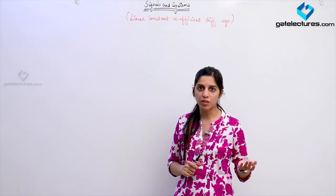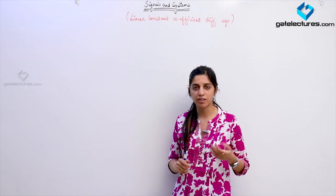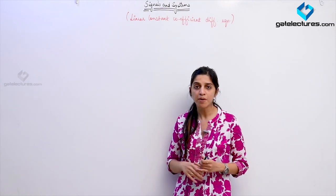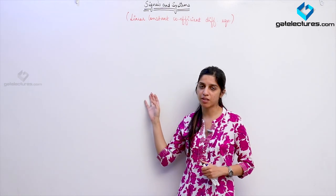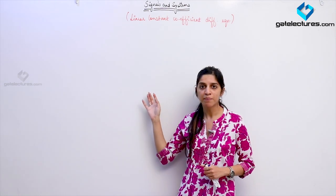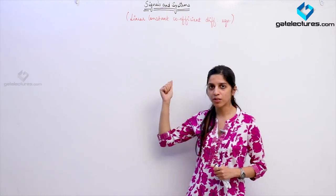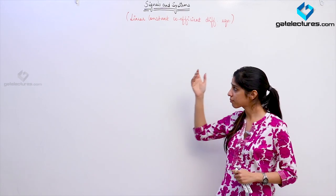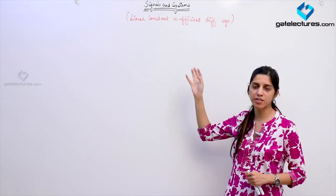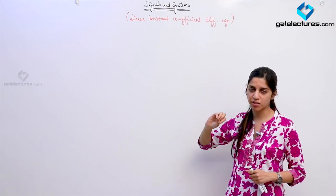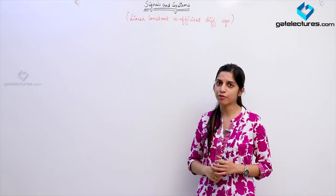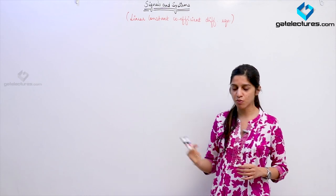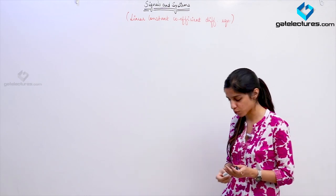If you are considering voltage as the input and current as the output, then we use differential equations to represent a system. We are going to look at the general representation of the differential equation and how we check different properties of a system using the differential equation.